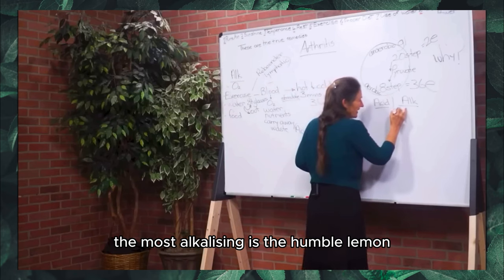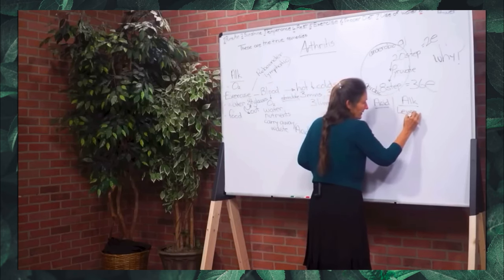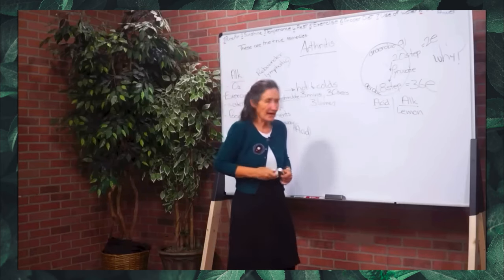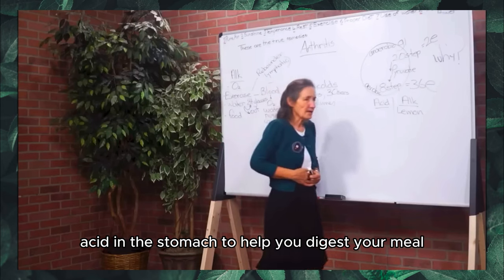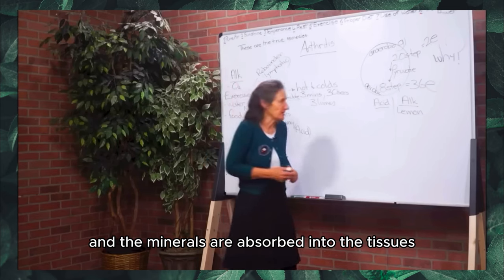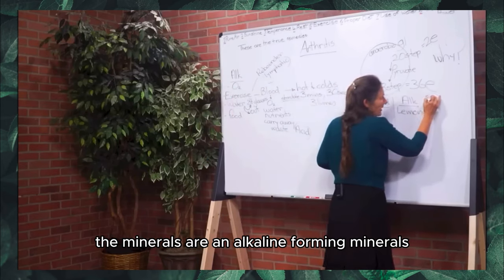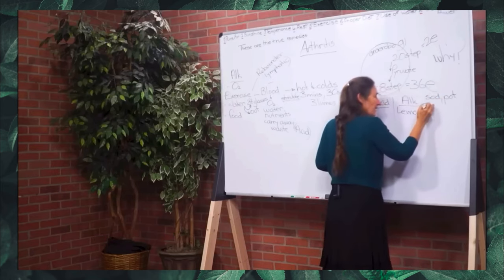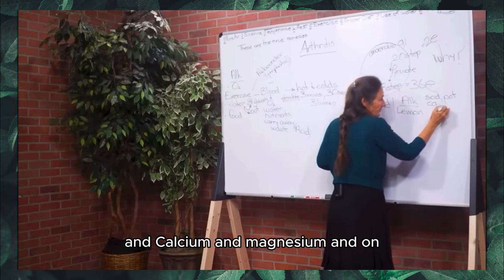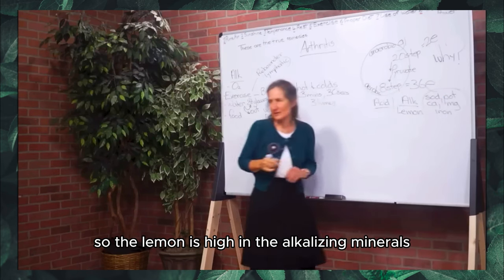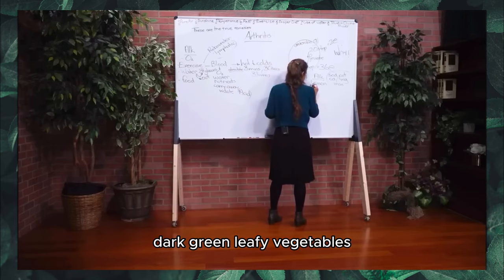The most alkalizing food is the humble lemon. The lemon is acid where it should be — in the stomach, helping digestion — but when broken down in the gastrointestinal tract and the minerals are absorbed into the tissues, they are alkaline-forming minerals: sodium, potassium, calcium, magnesium, and iron. So the lemon is high in alkalizing minerals. Next, dark green leafy vegetables are also very alkalizing.